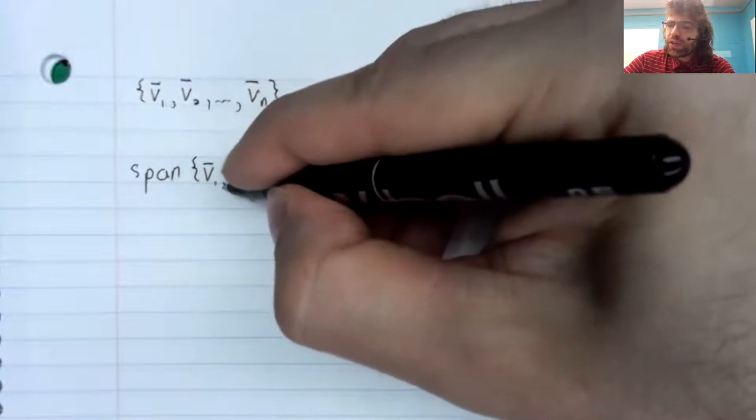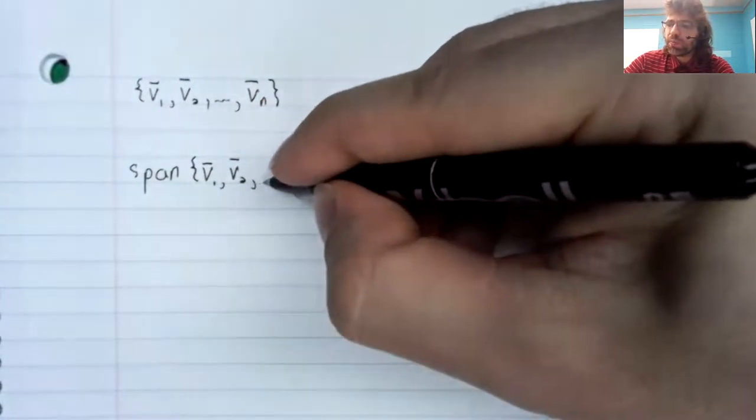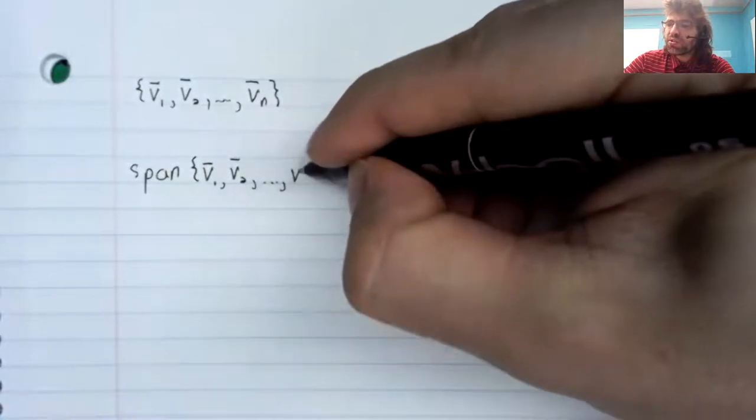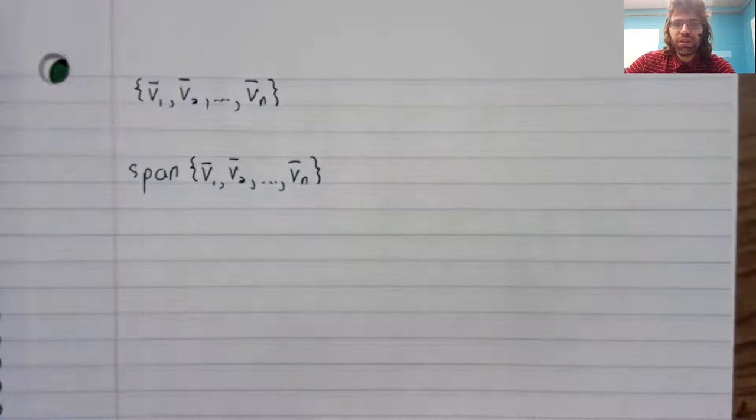We don't have any fancy notation. We just put the word span in front of the list.